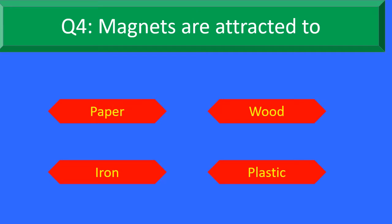Magnets are attracted to — Option A: Paper, Option B: Wood, Option C: Iron, and Option D: Plastic.